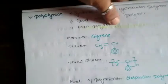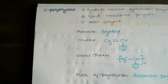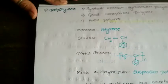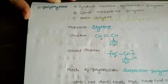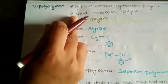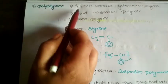HDPE is used in the preparation of containers, pipes, and bottles. LDPE is used in the preparation of squeezing bottles, flexible pipes, and toys. Remember the Ziegler-Natta catalyst and its composition — triethyl aluminium and titanium tetrachloride. That concludes polyethylene.